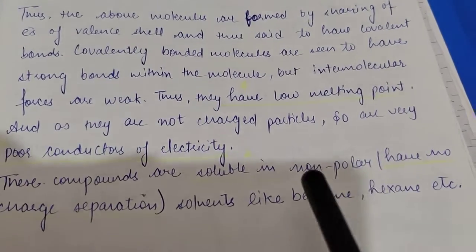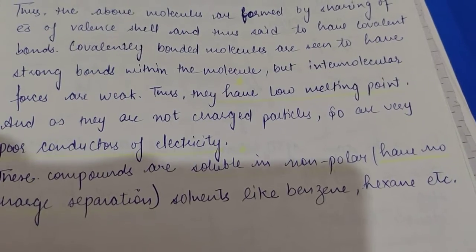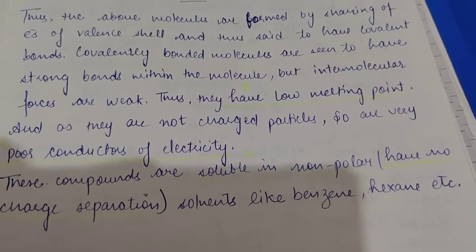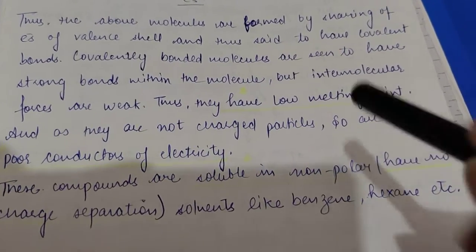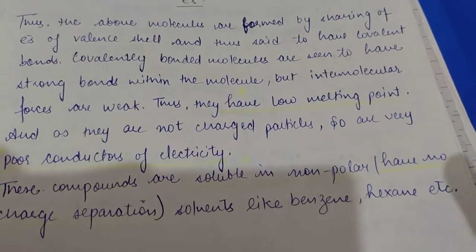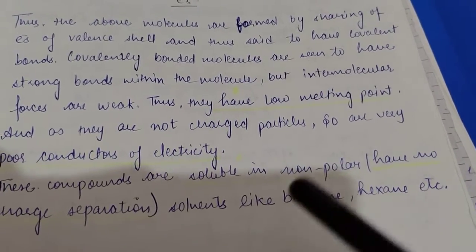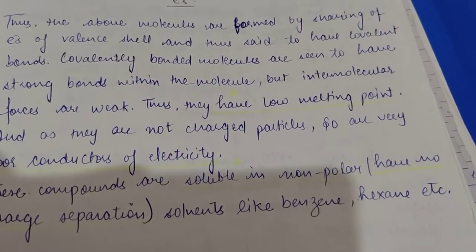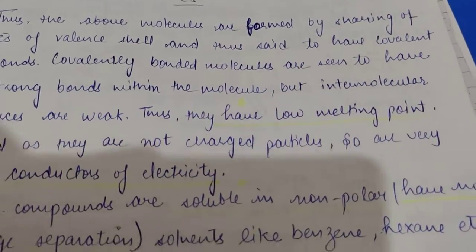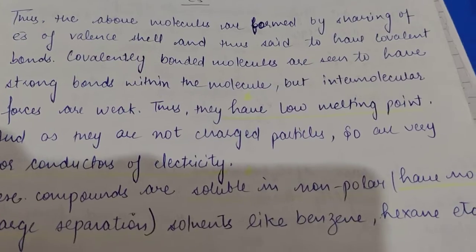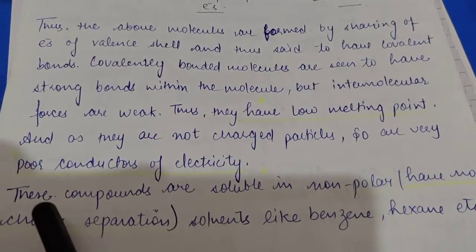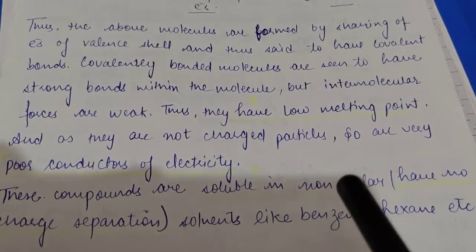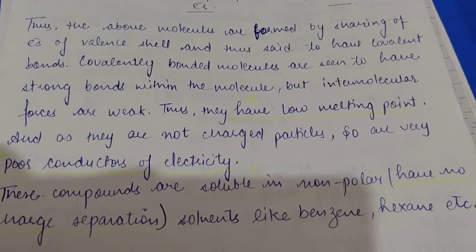These compounds are soluble in non-polar solvents. Non-polar solvents are those solvents in which there is no charge separation. For example, water has charge separation — oxygen is negative and hydrogen is positive — so carbon compounds are not soluble in water, but they are soluble in non-polar solvents like benzene and hexane. So these are three properties of carbon compounds: low melting point, poor conductors of electricity, and soluble in non-polar solvents.